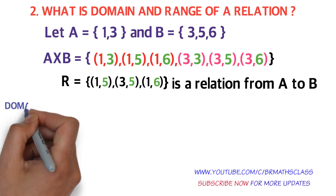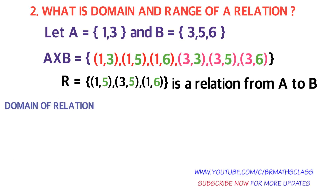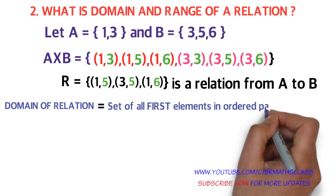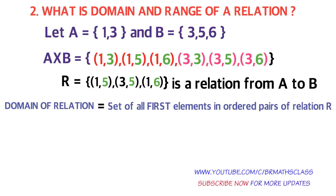Now we will learn the definition of domain and range of a relation. Domain of a relation is defined as the set of all first elements in ordered pairs. Observing relation R, the first elements in the ordered pairs are 1, 3, and 1. Written in roster form, the domain of the relation equals {1, 3}.